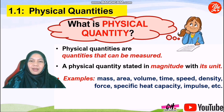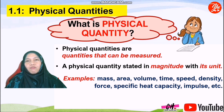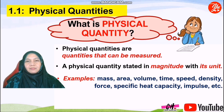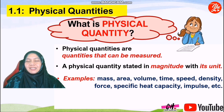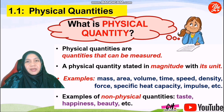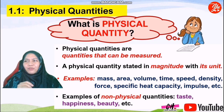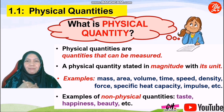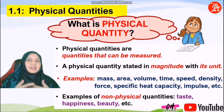Other examples of physical quantities include mass, area, volume, time, speed, density, force, specific heat capacity, impulse, and many more. How about non-physical quantity? Non-physical quantity is a non-measurable quantity. Examples include taste, happiness, and beauty. How do we measure taste or happiness or beauty? These quantities are very subjective, as different people have different views on them, so we call them non-physical quantities.